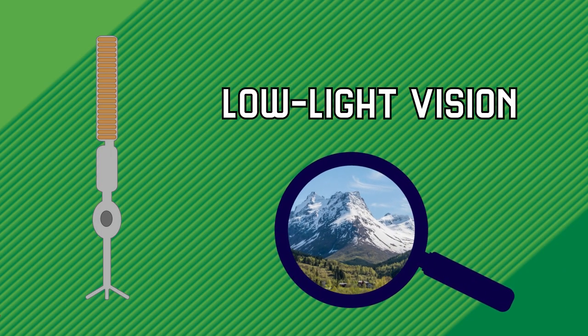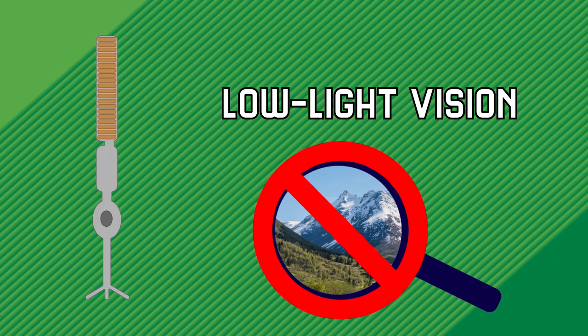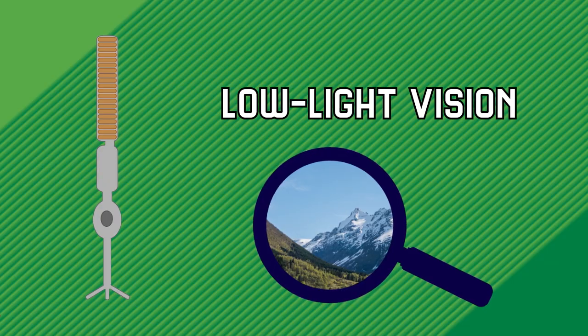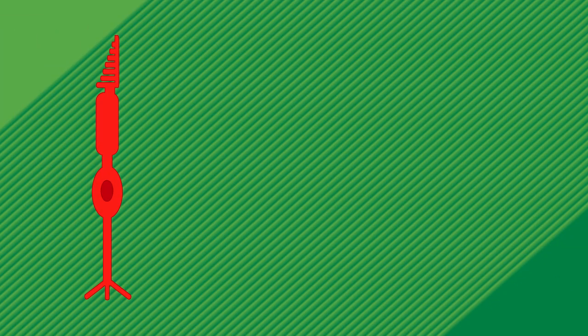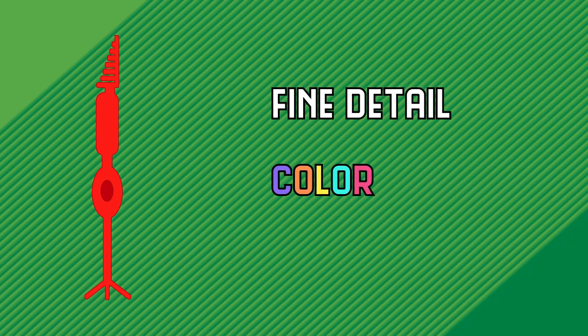The rod cells are in charge of low-light vision. They're not very useful for high-resolution images, but they're really important nonetheless. The cone cells are responsible for seeing fine detail and color. Humans have three subtypes of cones: red, green, and blue. All of our visible light is a combination of these three colors.